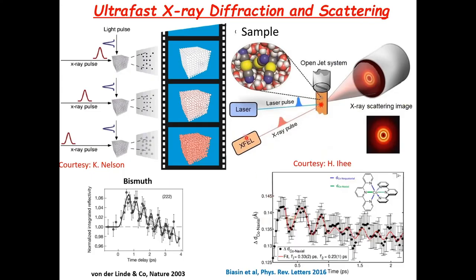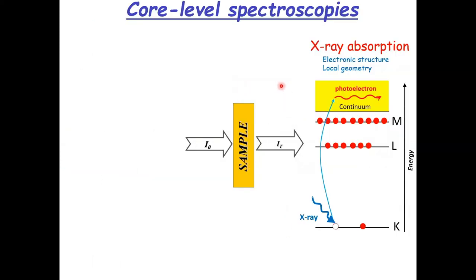When we started getting interested in structural dynamics in solutions, X-ray solution scattering was not yet implemented. We decided to go for X-ray absorption spectroscopy or core-level spectroscopy to be more general. You have different types of core-level spectroscopy. You can do transmission, where you probe through the sample and get an X-ray absorption spectrum. Typically you scan below the ionization continuum and cross into the continuum, generating a photoelectron. You get electronic structure and local geometry.